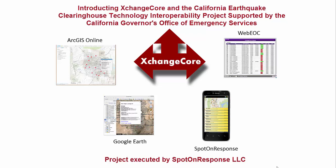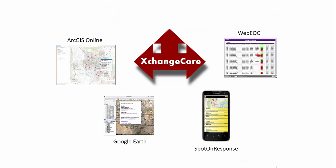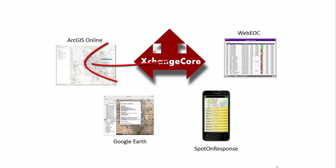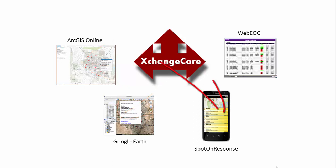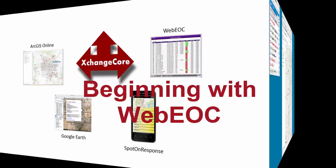Today we're going to take a look at Exchange Core, how Exchange Core serves to move information between WebEOC — the CalEOC implementation of it — and ArcGIS Online as our principal focus. We'll also see how that same data is exposed for use in Google Earth and the mobile app Spot-On Response, and then from other applications back into WebEOC.